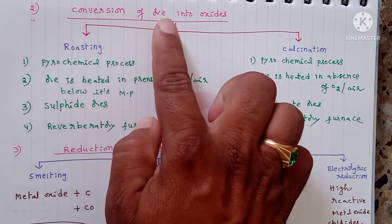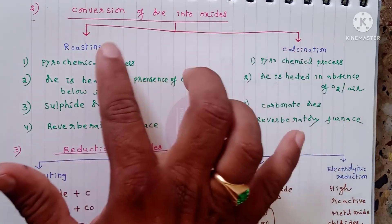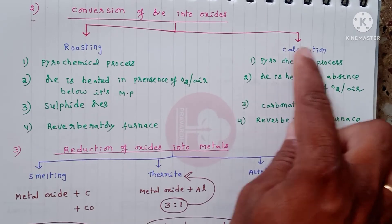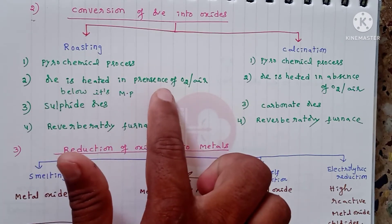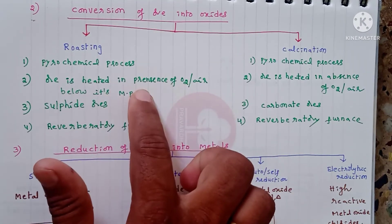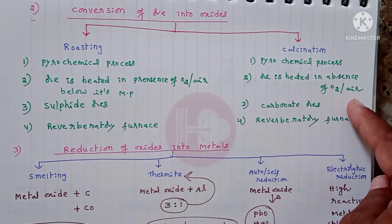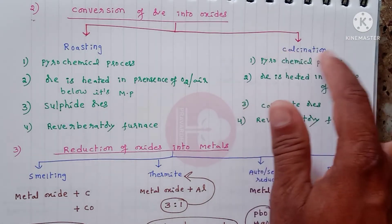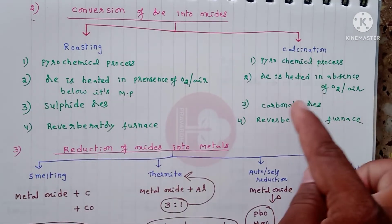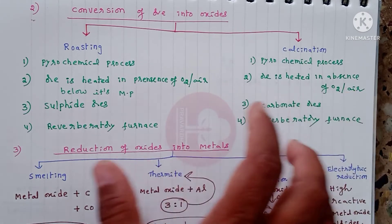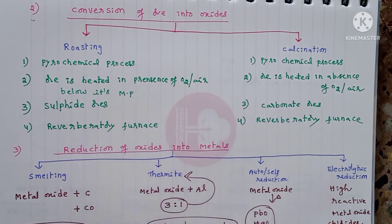The second step is conversion of ore into oxides. Two methods are used: roasting and calcination — both are pyrochemical processes. In roasting, the ore is heated in the presence of oxygen below its melting point. Roasting is mainly used for sulphide ores. Calcination is mainly used for carbonate ores. Both roasting and calcination are performed in reverberatory furnaces.